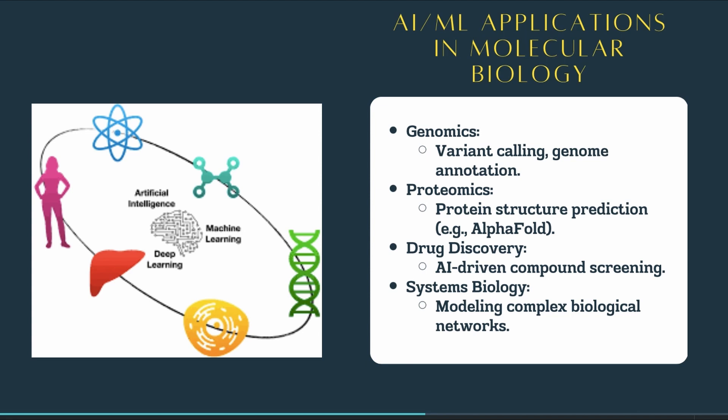Aside from genomics, we also have proteomics. AI models like AlphaFold — a really popular one — have revolutionized how we predict protein structure, allowing us to understand protein folding and function at a much deeper level. In fact, in 2024 the Nobel Prize went to the people who worked very hard on AlphaFold at DeepMind, which was really exciting.